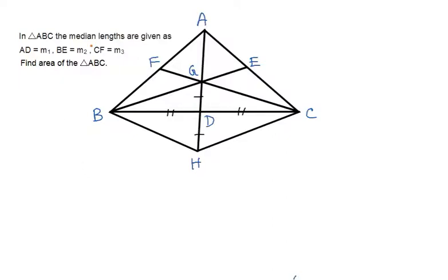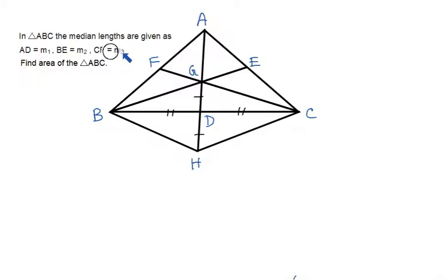Hello dear students. Today we have a problem: in triangle ABC, the median lengths are given as AD equal to M1, BE equal to M2, and CF equal to M3. We need to find the area of triangle ABC in terms of the three medians M1, M2, M3.